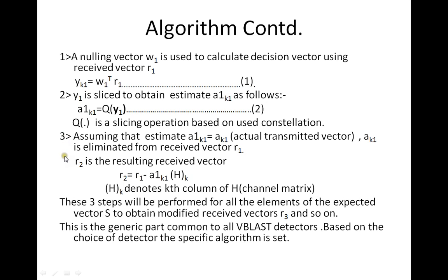These three steps are carried out recursively until the exact estimate of the output vector is obtained and detection is complete. They are performed for all elements of the expected vector S, since S can be a combination of all possible expected transmitted symbols at the receiver. Hence these three steps are performed in recursion to obtain modified received vectors R3, R4, and so on. This algorithm — the first three steps — is the generic part common to all kinds of VBLAST detectors; based on the choice of detector, the algorithm can be specified further.